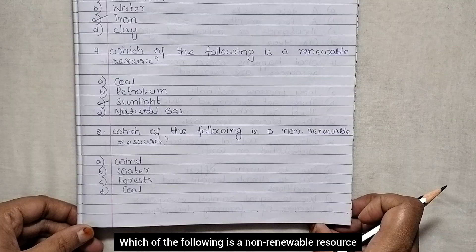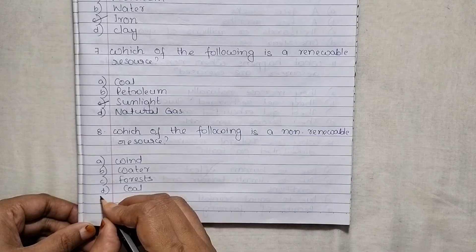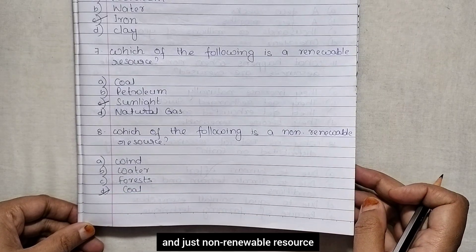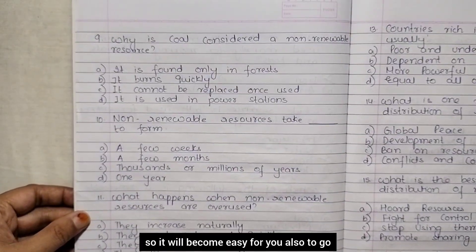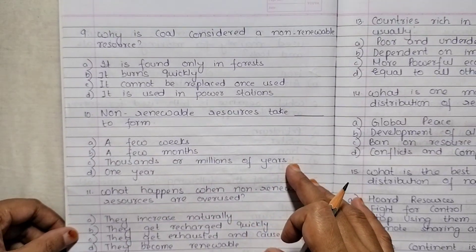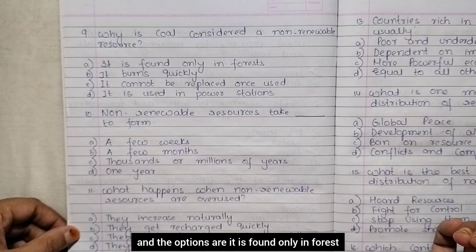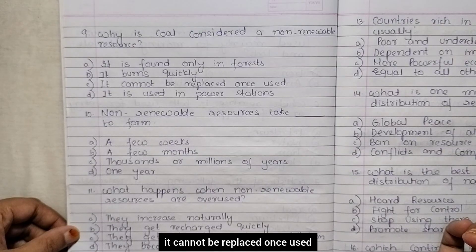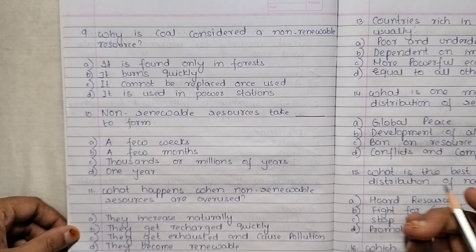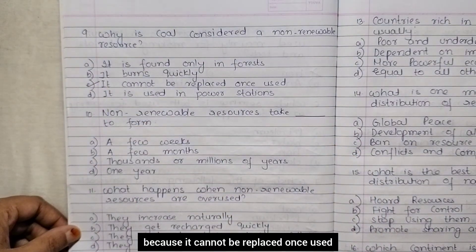Which of the following is a non-renewable resource? Options are wind, water, forest, coal. Coal is a non-renewable resource. MCQs are covered topic-wise, so it will be easy for you to go through the topic. Why is coal considered a non-renewable resource? The options are: it is found only in forest, it burns quickly, it cannot be replaced once used, it is used in power stations. Coal is considered non-renewable because it cannot be replaced once used.